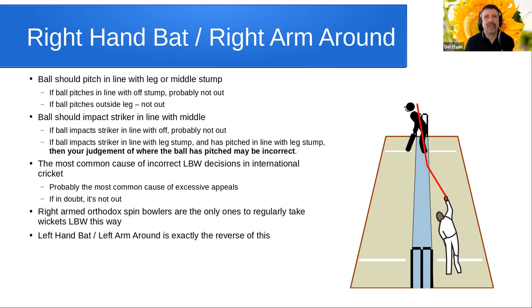The ball should impact the striker in line with middle stump. If the ball impacts in line with off stump, due to the position of the bowler's hand being further from the stumps, it is probably moving too far down the off side and will miss off stump. If the ball has pitched in line with leg stump and impacted the striker in line with leg stump, then you have a dilemma — and I would say this is probably not out. It is much more likely that you've made a parallax error on the position of the ball pitching, and the ball has in fact pitched outside of leg stump when you thought it pitched in line. If in doubt, give the batter the benefit of the doubt.